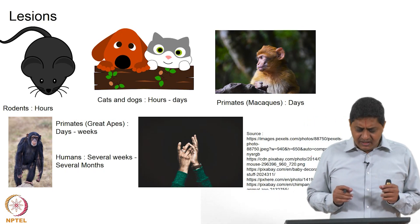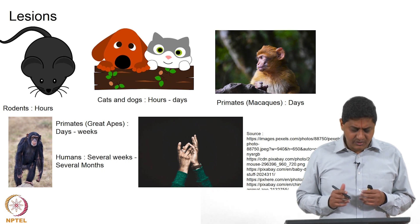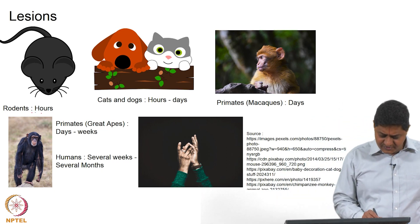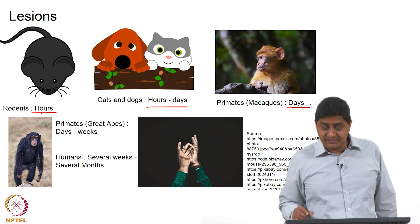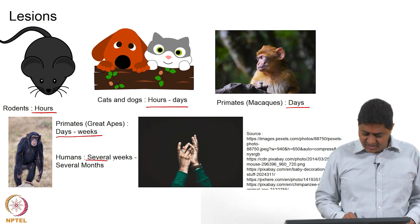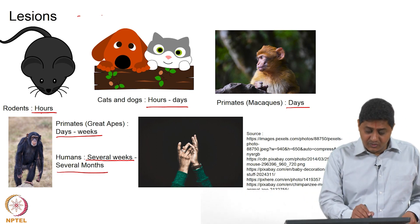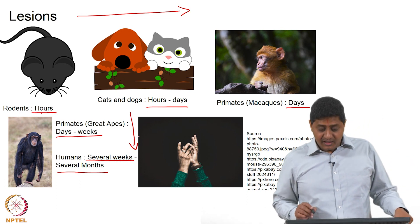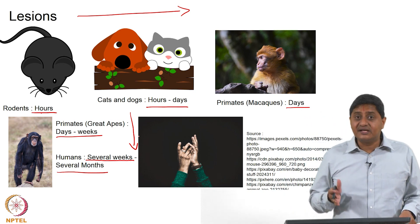We discussed the case of lesions — how different animals behave post-lesions, and how much time is taken by different animals to recover. Rodents take a few hours, cats and dogs hours to days, primates such as macaques days, and great apes days to weeks. In humans, this may be several weeks to several months. As you go in this direction, the potential for recovery reduces and the time for recovery increases.